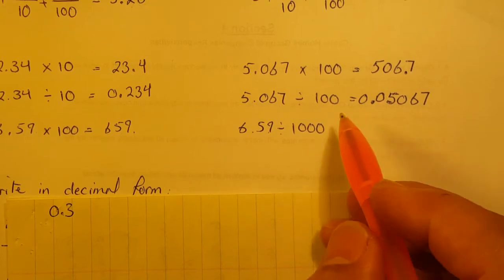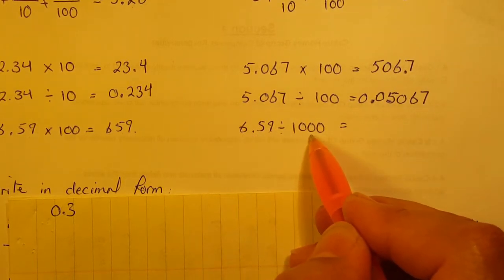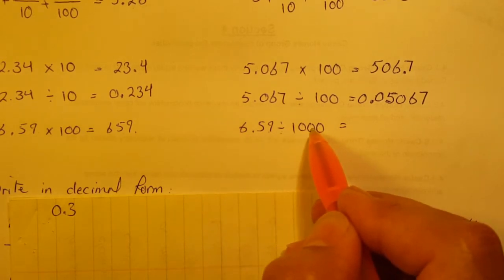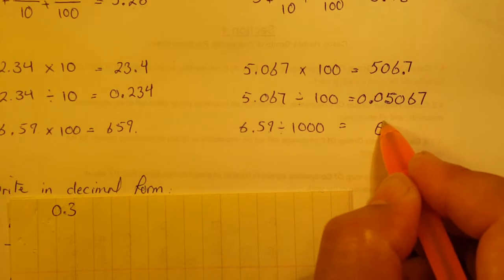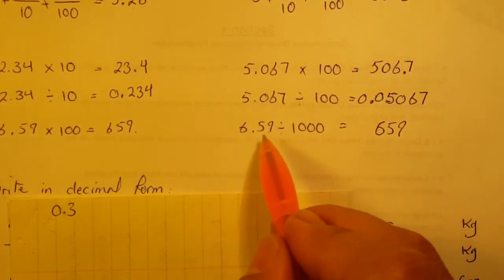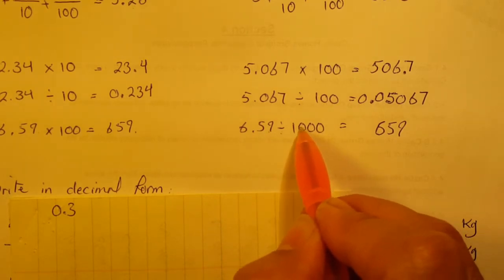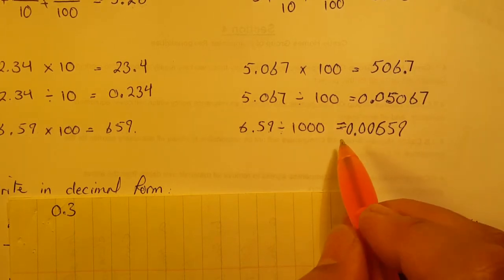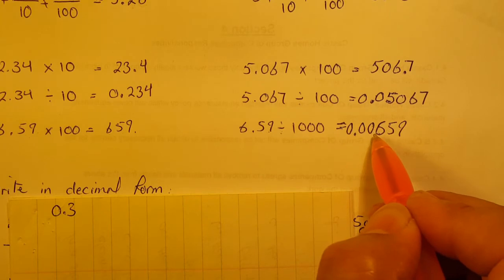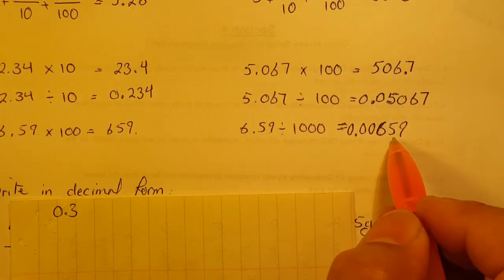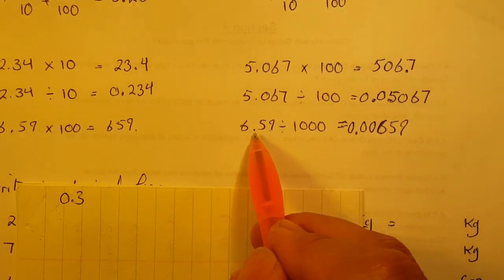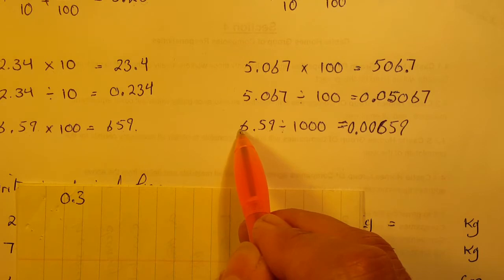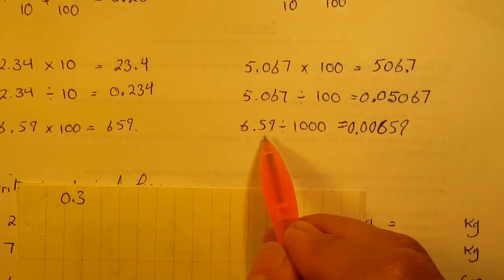As you know, we don't write the decimal when it's a whole number, so we just write 659. For the next one divided by 1000: it's division so the decimal moves to the left. How many digits? Three, because we have three zeros. So for 5.659, moving three places left gives us 0.00659.